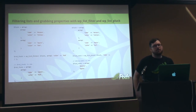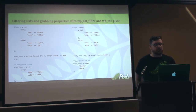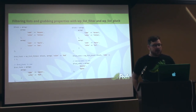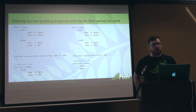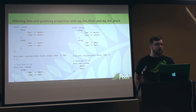Filtering lists and grabbing properties with LWP List Filtering and LWP List Pluck — those are really cool functions as well. You can get an array of objects or arrays. For instance, in List Filter you can filter by arrays that have the color of red. In this case we only had one item, so it pulls that one array. But if you have multiple items of that same color red, you can pull all those items out.